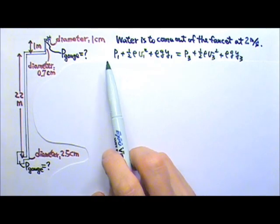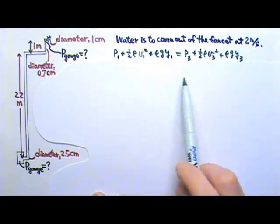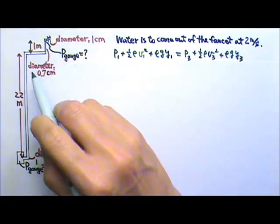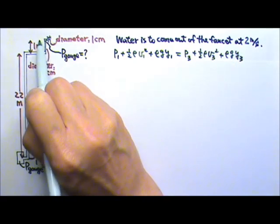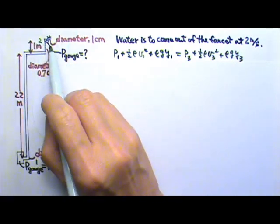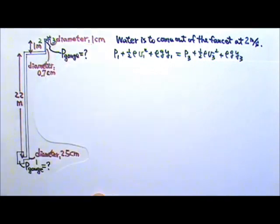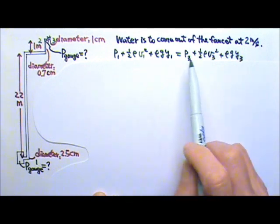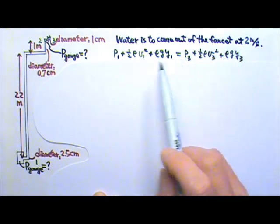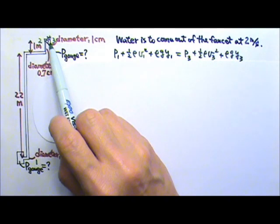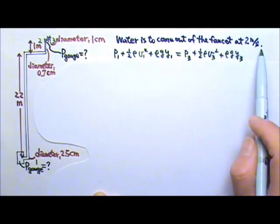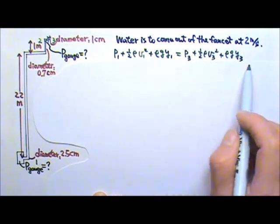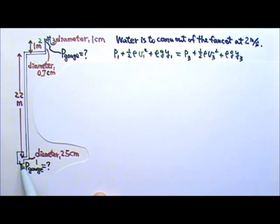It's a fluid problem, so we're going to use Bernoulli's equation. I'm going to call the pump here as 1, right before the faucet is 2, and at the faucet opening is 3. Let's look at 1 and 3 first because we have all of the information about 3. We know the pressure at faucet opening, the flow speed at faucet opening, and the height at faucet opening. We can use this information to find the gauge pressure at the pump.